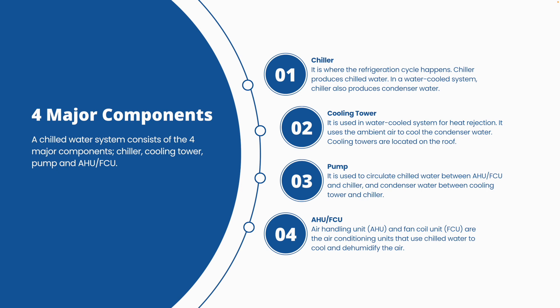The third component is the pump, which is necessary to move water around. We have two sets of pumps: the chilled water pump and the condenser water pump. The fourth component is the AHU and FCU — air handling unit and fan coil unit. These are the air conditioning units that cool down the room air, using chilled water instead of refrigerant to cool down and dehumidify the air.